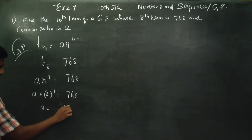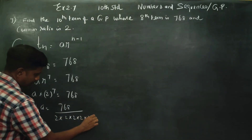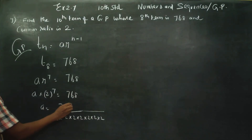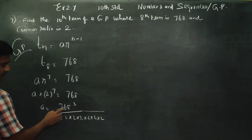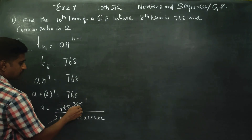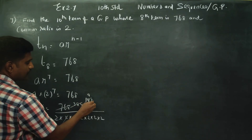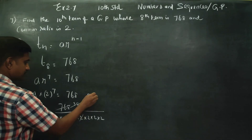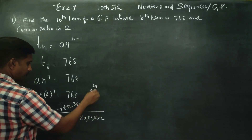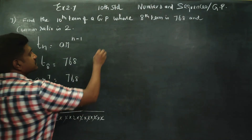So A = 768 divided by 2^7. Calculating: 2^7 = 128. Dividing 768 by 128 gives us A = 6. Therefore, A is equal to 6.